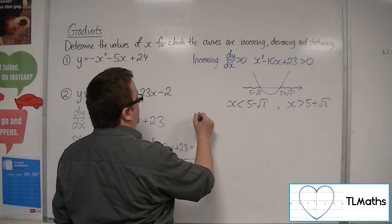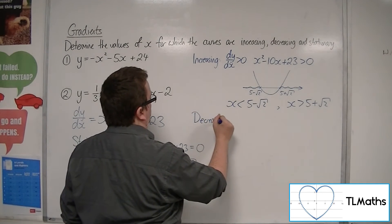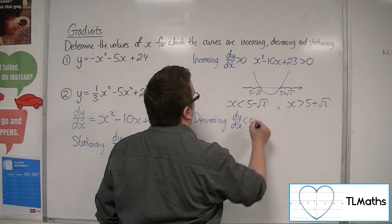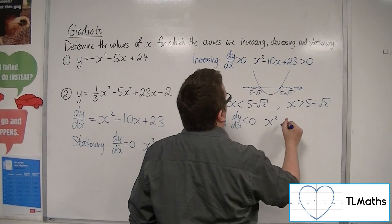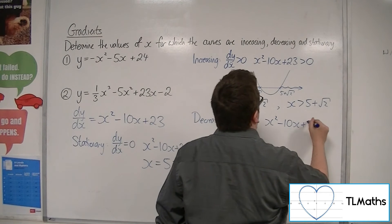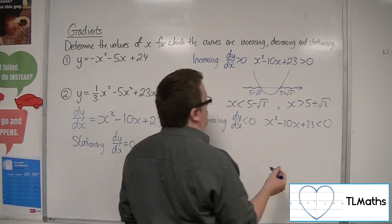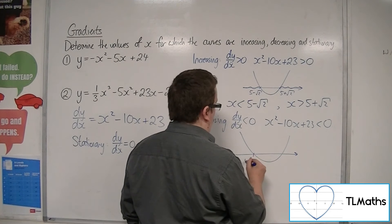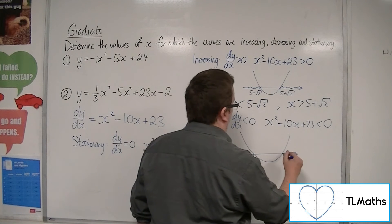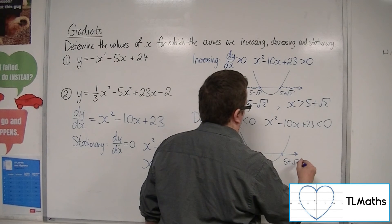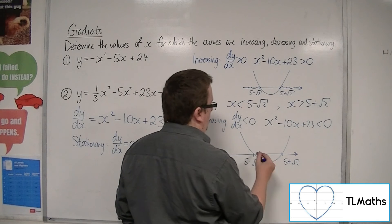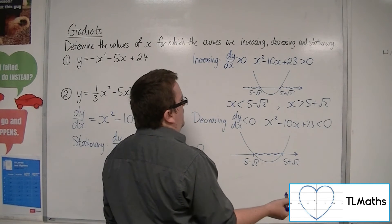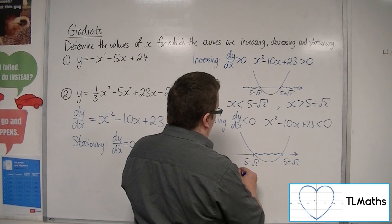So, we'd be decreasing when dy by dx is less than 0. So, solving the inequality x squared minus 10x plus 23 is less than 0. So, in other words, where is the parabola now below the x-axis? So, it's below it there. So, we'd be between these two values.